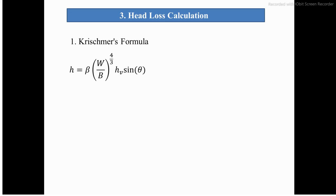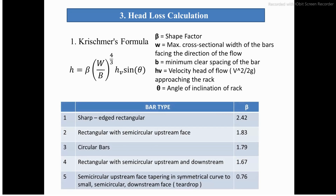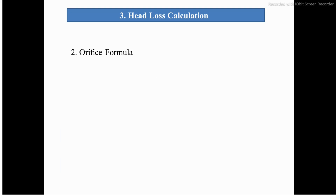The first is the Kirschmer formula: head loss = β × (W/b)^(4/3) × Hv × sin θ, where β is the bar shape factor, W is the maximum cross-sectional width of bars facing the flow, b is the minimum clear spacing, Hv is the approach velocity head, and θ is the angle of inclination of the rack. The shape factor β is given in a table; for sharp rectangular bars, β = 2.42.